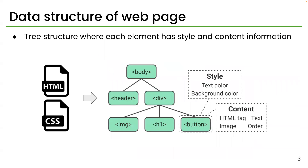Formally, we represent a web page as a tree structure where each element has style and content information. The style information includes text and background colors, and the content information includes HTML tag, text, image, and so on.